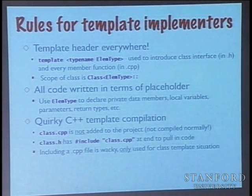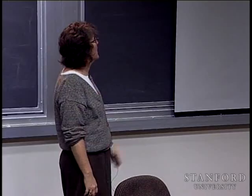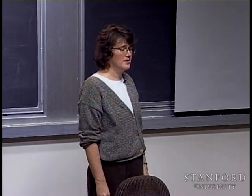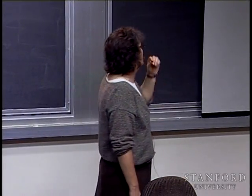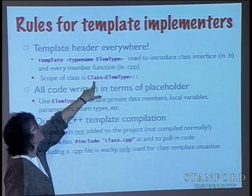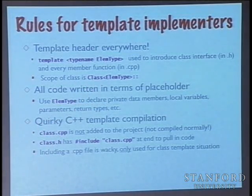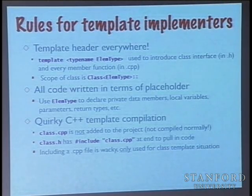In the .cpp, the template header gets repeated on every single member function definition. There's not one overarching scope around all of them — each has its own independent setup. And the scope of the class now has a new name: your original class name with the angle-bracket element-type appended. There is no longer a plain 'vector' once you've made that change. Even in the scope resolution used within member functions themselves, you'll always see that adornment.